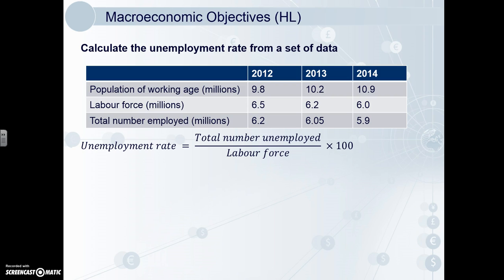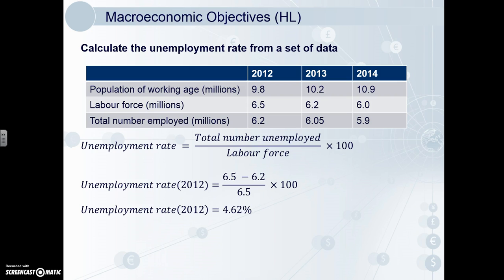The maths is simple — you just plug in the numbers. The total number of unemployed is just the total labour force minus those employed. Put in the numbers and follow it through, and we get an unemployment rate of 4.62%. Remember that you must include the percentage sign — 4.62 by itself will not get you the full marks.